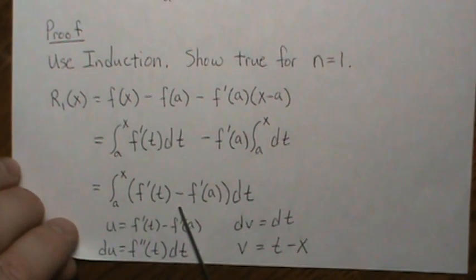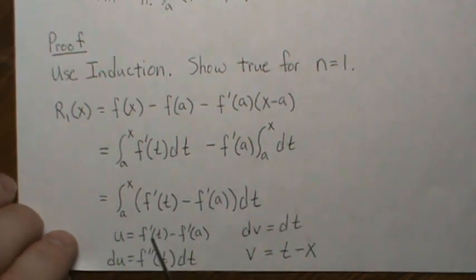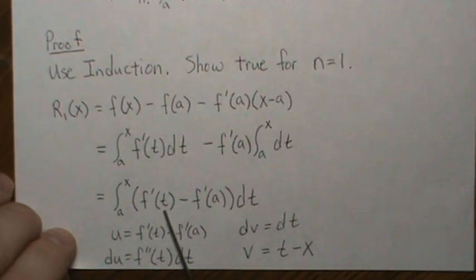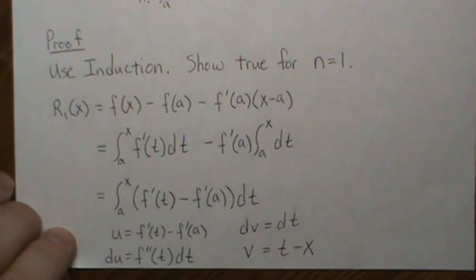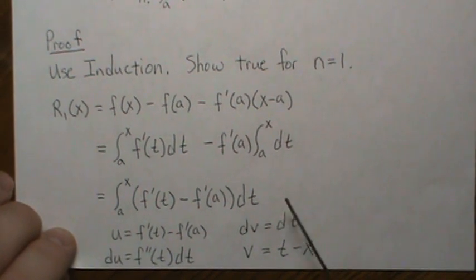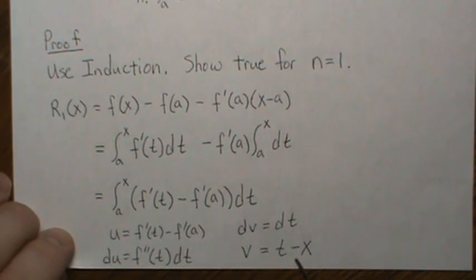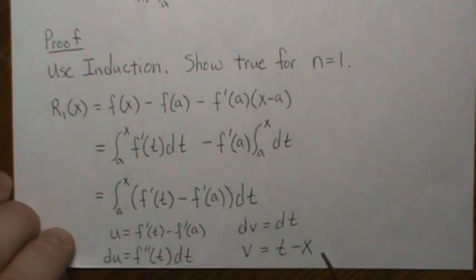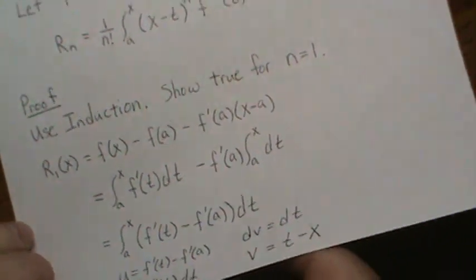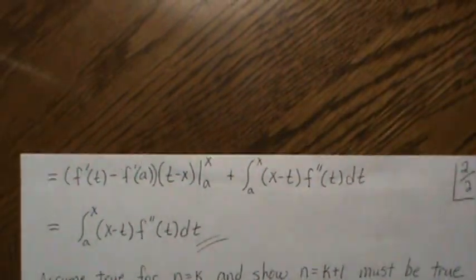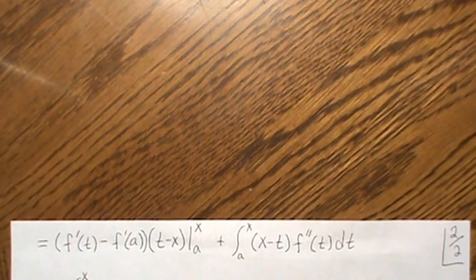And now we're going to use integration by parts. We're going to let u equal this piece, so du is this, dv is just t, and then v, when you integrate it, it's t minus, and then we add a constant x.